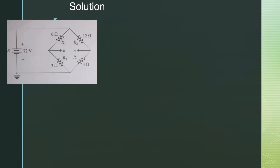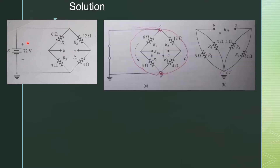In the first step, replace the load resistor from points A and B. Now, in order to find R Thevenin between these two points, we have to remove the voltage source with a short circuit. So, we replace that voltage source with the short circuit.